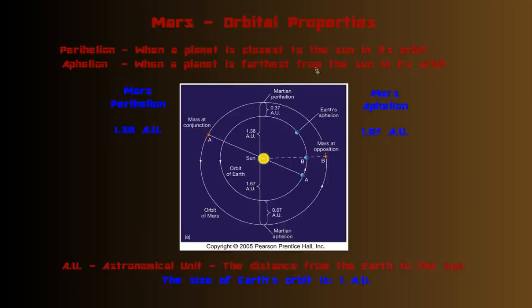Aphelion is when a planet is farthest from the Sun in its orbit. And so that's typically on the other side. And so here, when Mars is here in its orbit, it's 1.67 AU away. And so yeah, so these are two orbital position terms you'll need to know. And again, here are the distances.